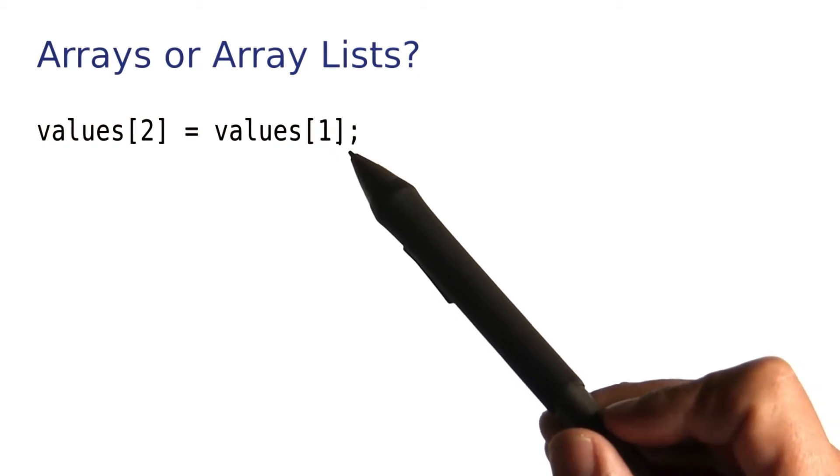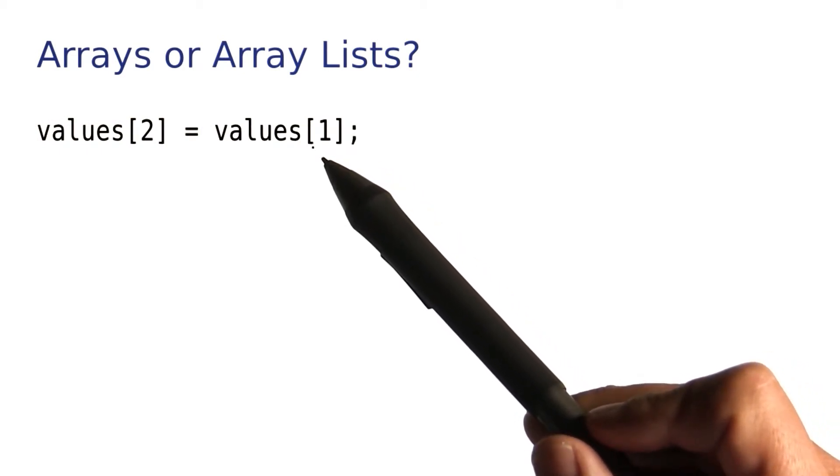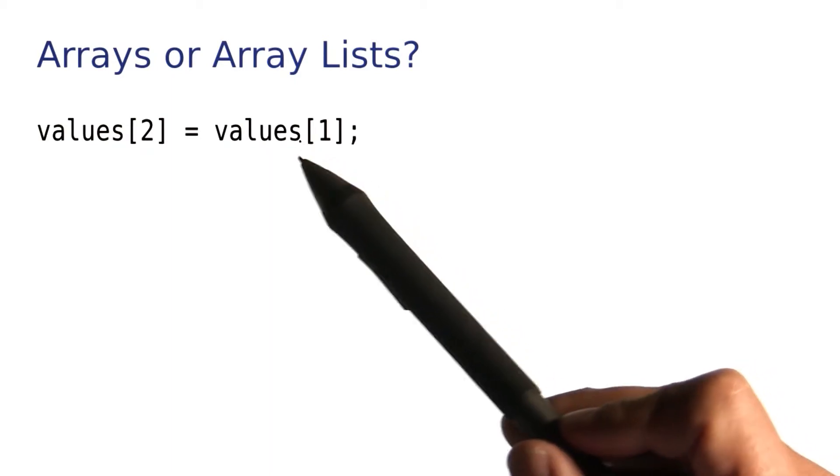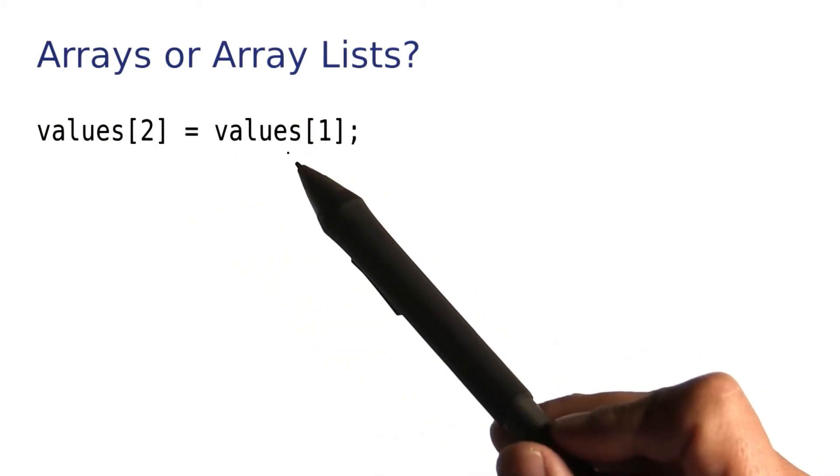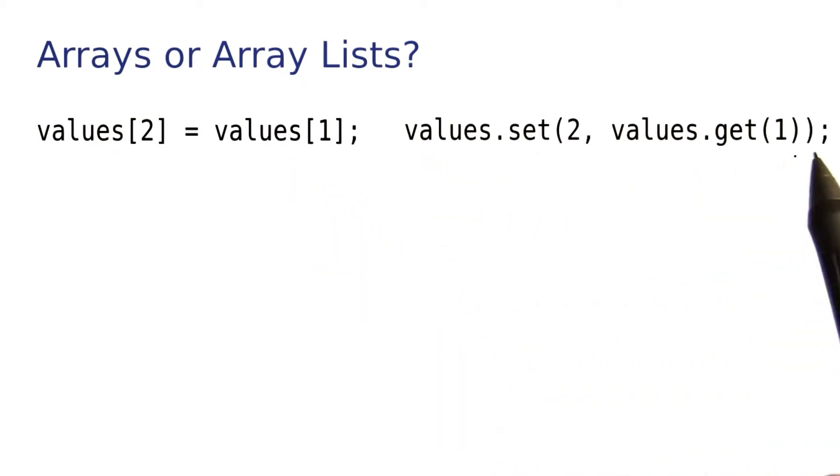First off, the syntax with the brackets is more compact. For example, here we assign values 1 to values 2, and that's a bit easier to read than the equivalent with ArrayLists, which you see over here.